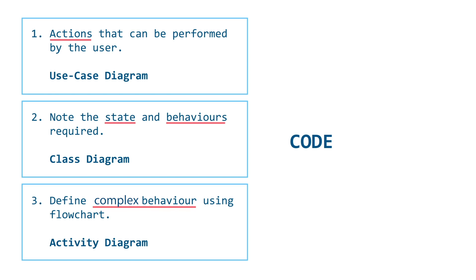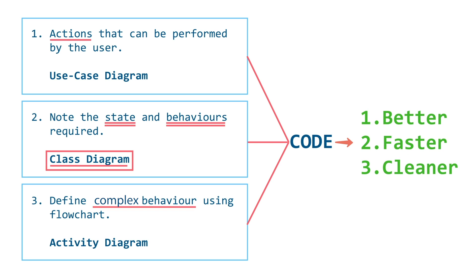This comes from almost all three diagrams, but primarily it comes from the class diagram, because the state and behaviors that you're going to store is stored here. And you'll notice that if you follow this process, you will code much better, much faster, and much cleaner.